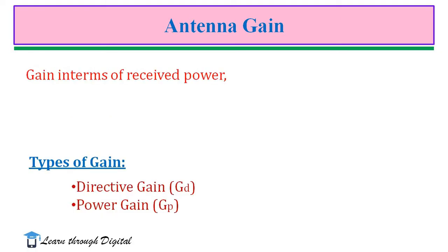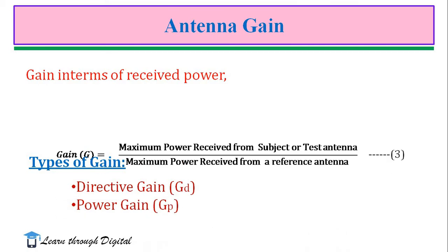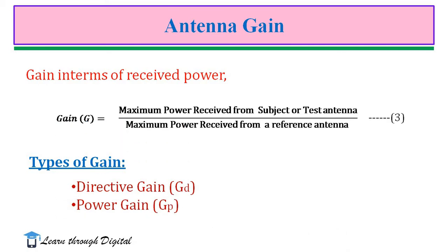Gain can also be represented in terms of received power. It is the ratio of maximum power received from the subject or test antenna to the maximum power received from a reference antenna — that is, power received from our own antenna to the power received from an isotropic antenna.